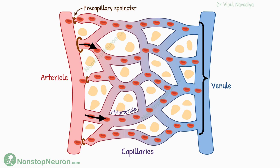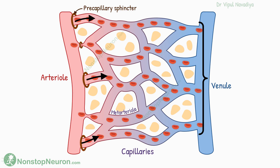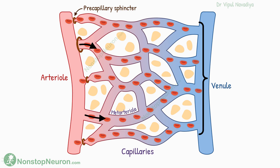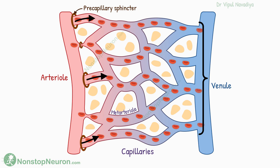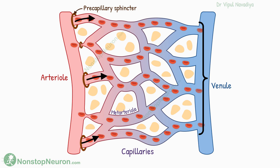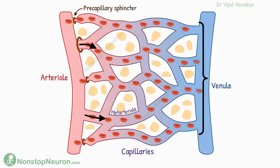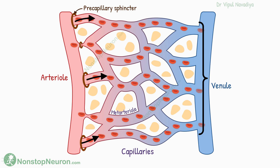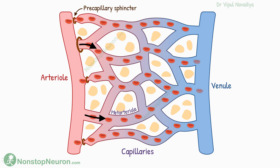Now, in any tissue, there are so many capillaries. So although flow through an individual capillary keeps turning on and off, the average flow in and out of the area remains constant in a given situation. So this is the phenomenon of vasomotion.